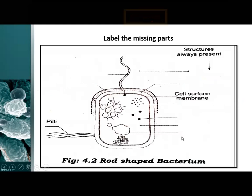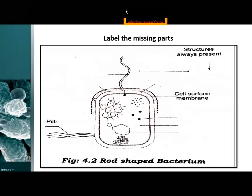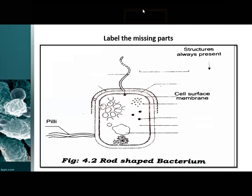Viruses are inactive outside the host cell - when outside, they show no living activity. Now here is a diagram of a rod-shaped bacterium with some parts missing. I want you to participate in this activity and name each part. Starting from the first structure - what do we call it? Give me the name in the chat box. Excellent - flagella! Now what do we call this next part?